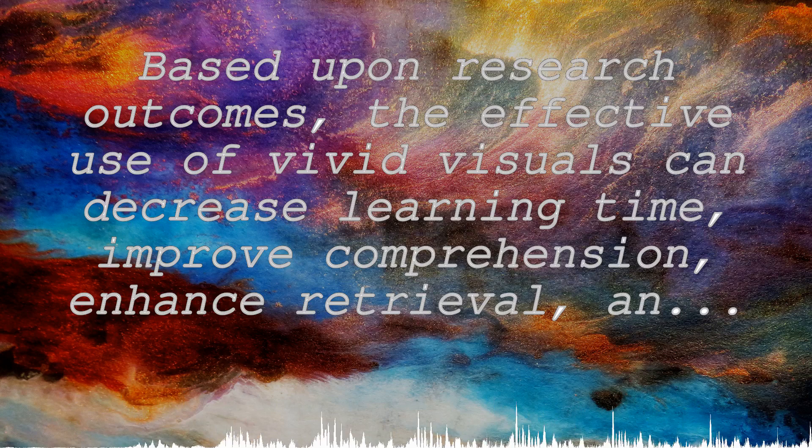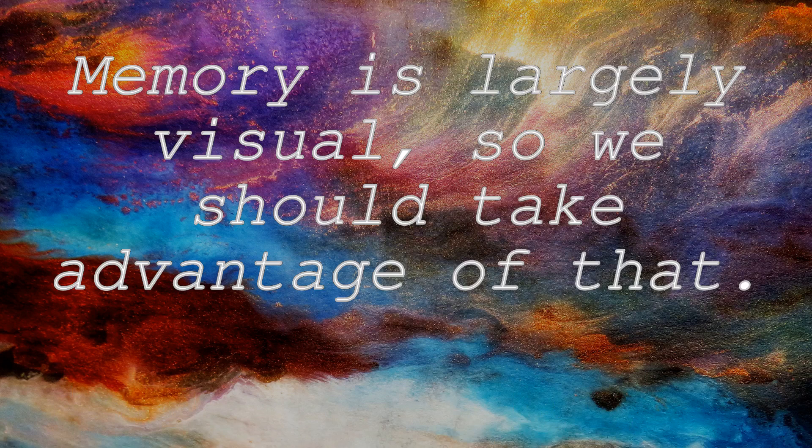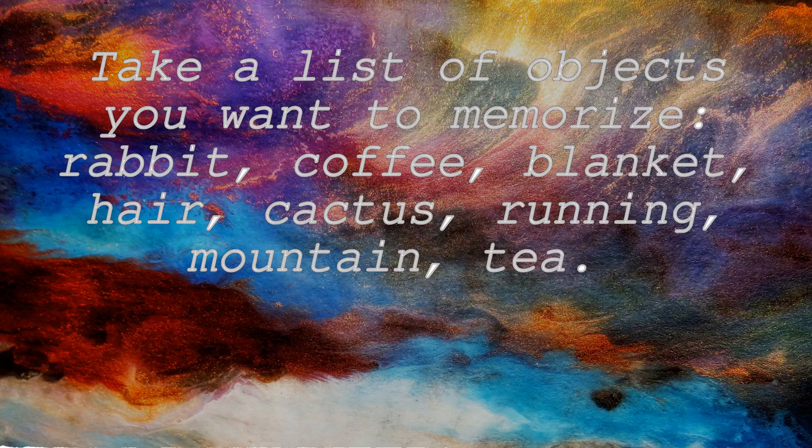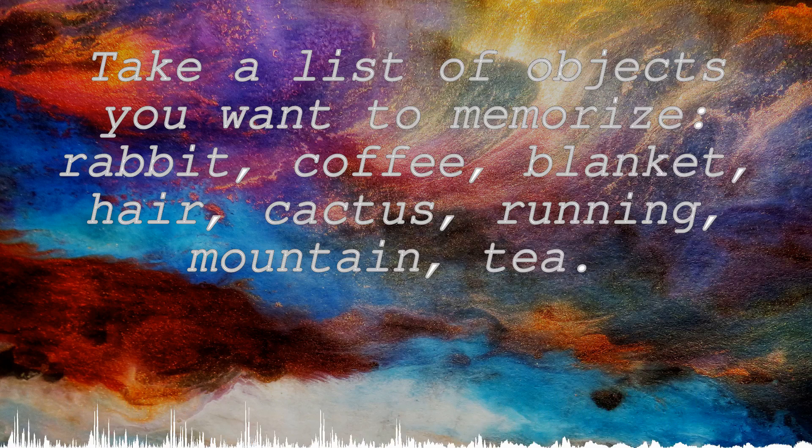Take a list of objects you want to memorize: rabbit, coffee, blanket, hair, cactus, running, mountain, tea. There are eight items. This would seem to be incredibly difficult to memorize because everything is unrelated. However, you can give yourself a better chance by creating a vivid and striking mental image for each item.